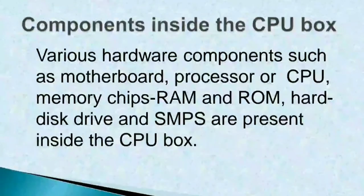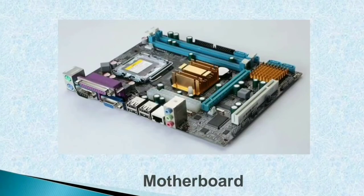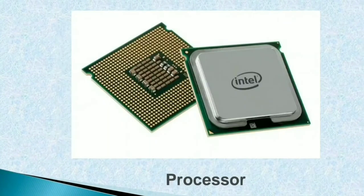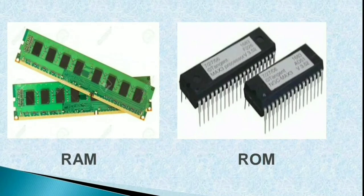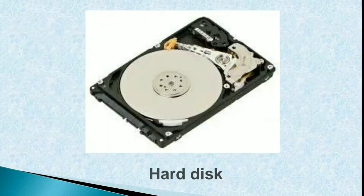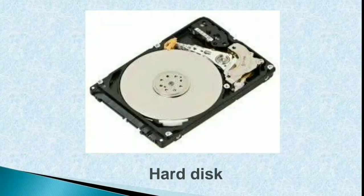Various hardware components such as motherboard, processor or CPU, memory chips, RAM and ROM, hard disk drive, and SMPS are present inside the CPU box. Now let's discuss all these parts in detail.